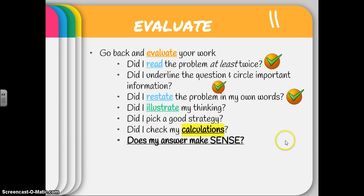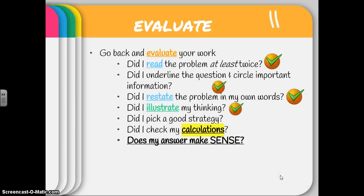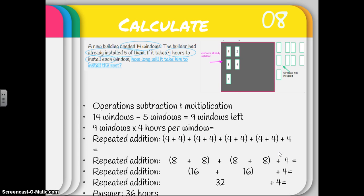Did I illustrate my thinking? There's my great illustration. I even focused in on some of those words — the building helped me with my mental image, the windows helped me with my mental image. I can give myself a check for that. Now, did I pick a good strategy and check my calculations? I went right for those operations. I feel pretty good about my subtraction facts — 14 minus 5, I know that's 9, and my picture shows that as well. I can even count up here and show that I have a group of 5, a group of 9, and 14 all together.